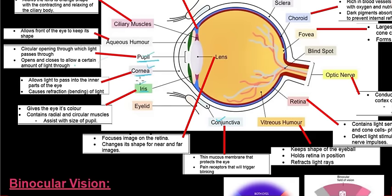Another part that plays a role with the pupil is the iris. If you've looked at somebody and seen that they have brown, blue, or green eyes, that is the iris. The iris gives the eye its color and also contains radial and circular muscles that assist with the size of the pupil as part of the pupillary mechanism.